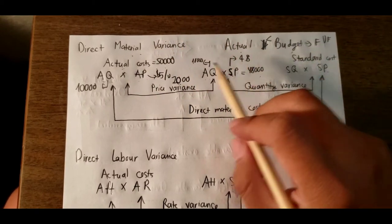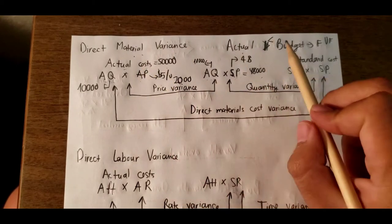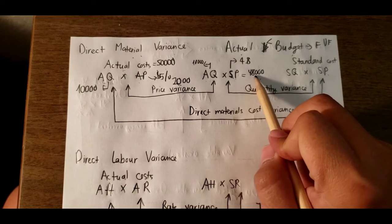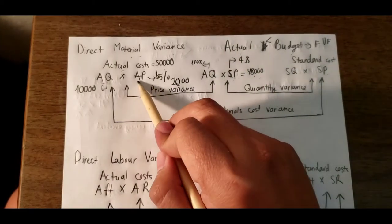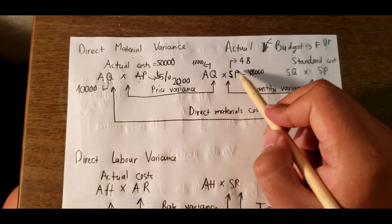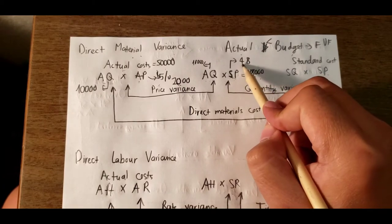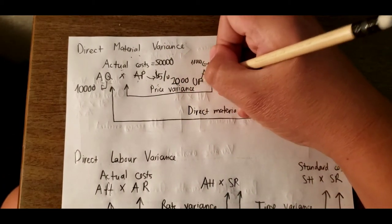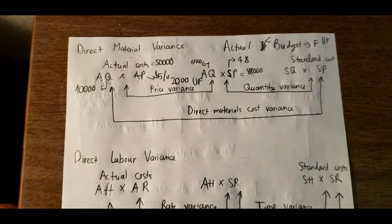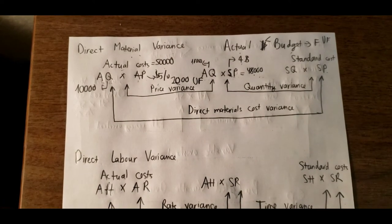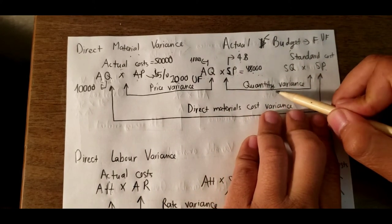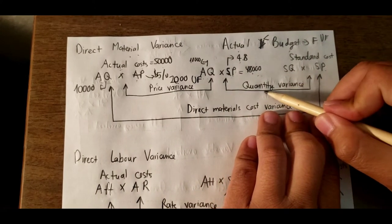We have $50,000 minus $48,000, which is $2,000. The actual cost is higher than the standard price because actual price is $5 but standard price is $4.8, so that's unfavorable.